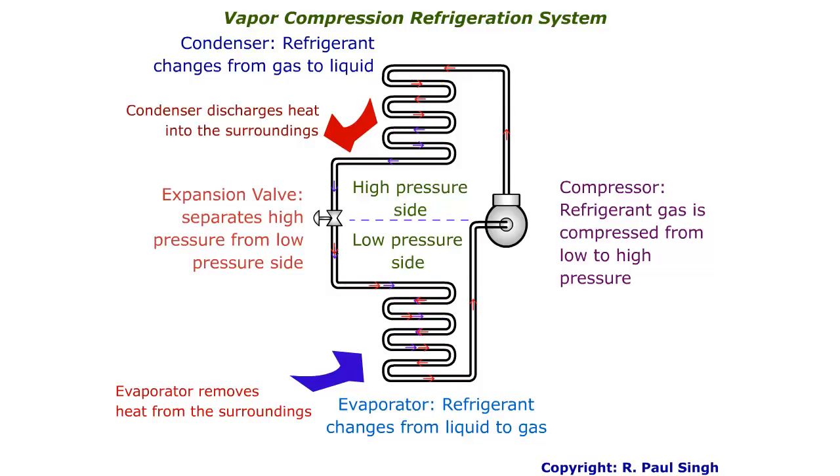And then that liquid goes through the expansion valve, where it is essentially changing from a high-pressure side to low-pressure side. So as it goes through the expansion valve, most of the refrigerant stays in the liquid state, but some of it does turn into a vapor state.